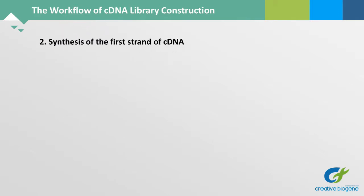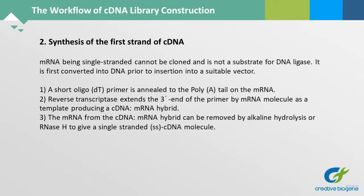Step 2: Synthesis of the first strand of cDNA. mRNA, being single-stranded, cannot be cloned and is not a substrate for DNA ligase. It is first converted into DNA prior to insertion into a suitable vector. A short oligo-primer is annealed to the poly-A tail on the mRNA. Reverse transcriptase extends the 3-prime end of the primer using the mRNA molecule as a template, producing a cDNA–mRNA hybrid. The mRNA from the hybrid can be removed by alkaline hydrolysis or ribonuclease H to give a single-stranded cDNA molecule.